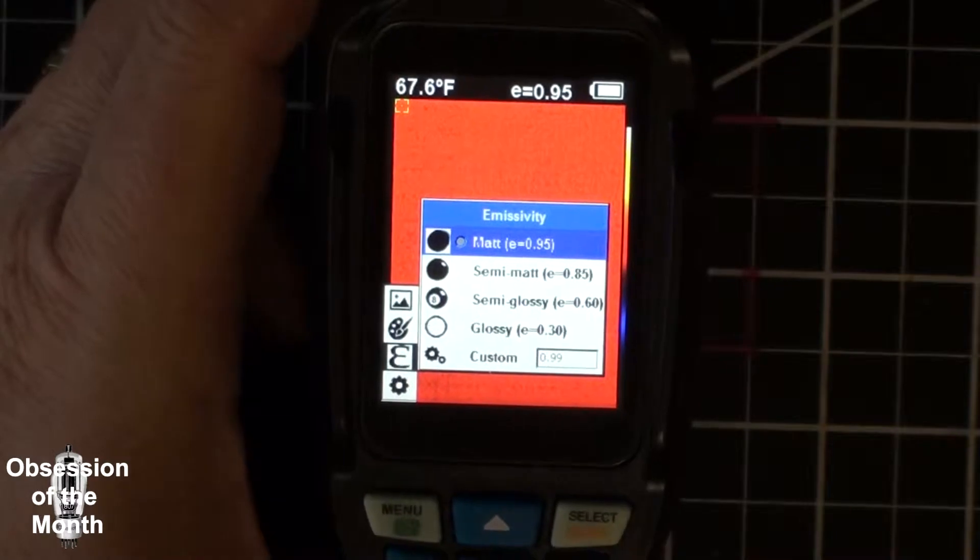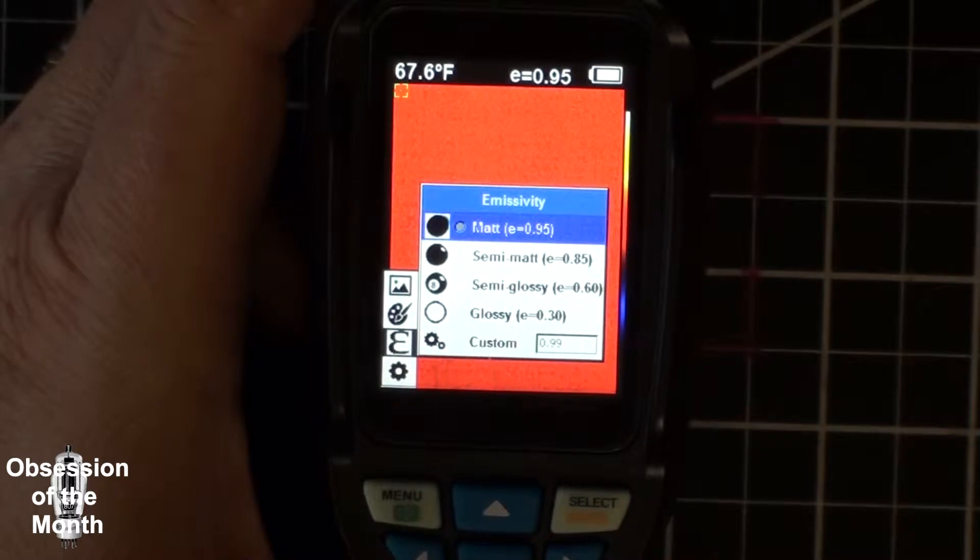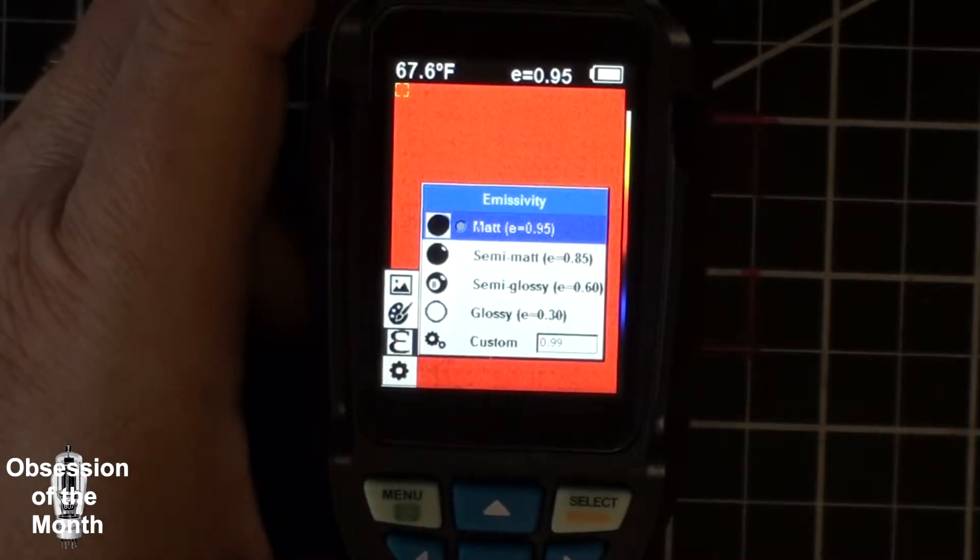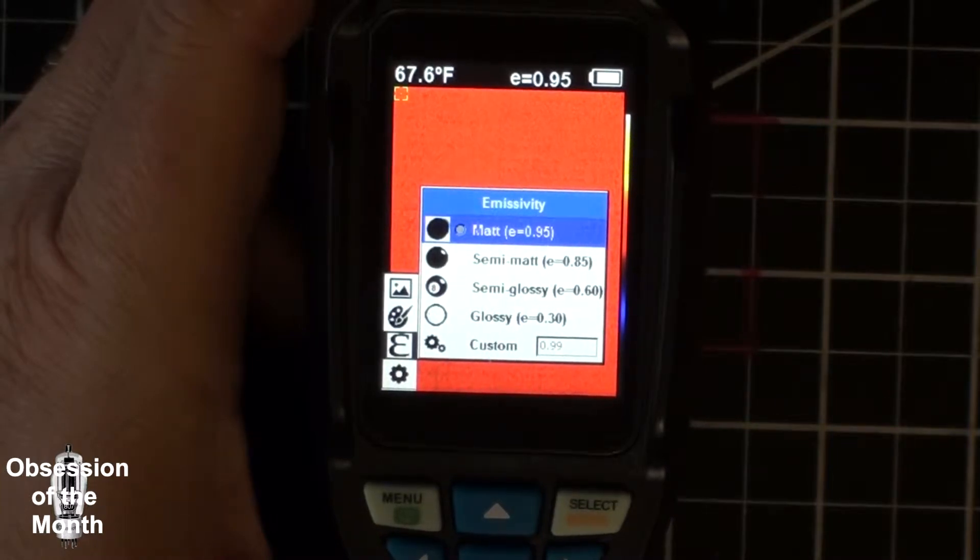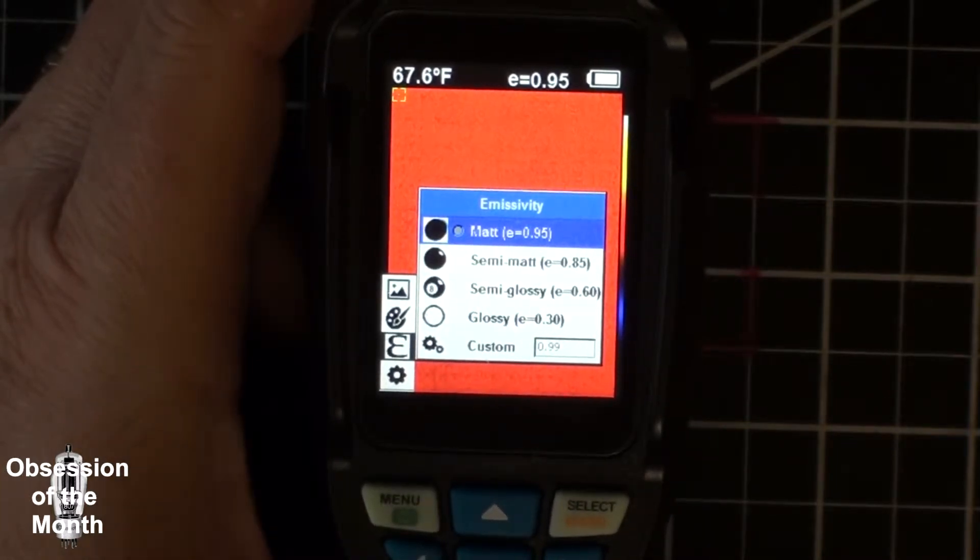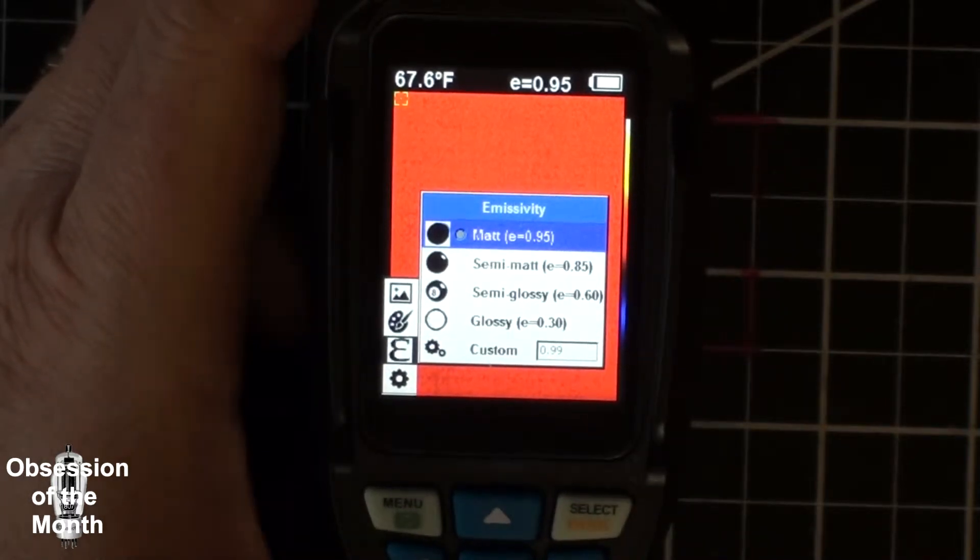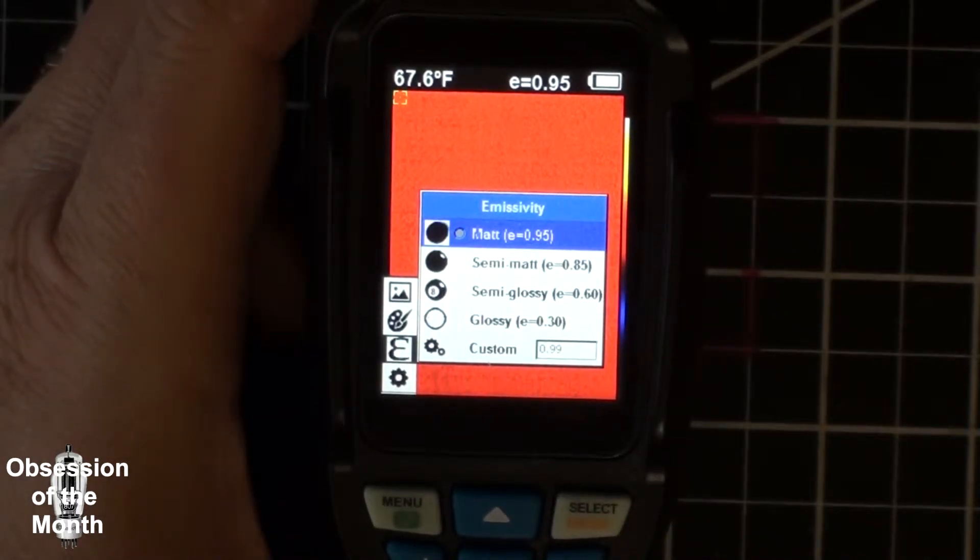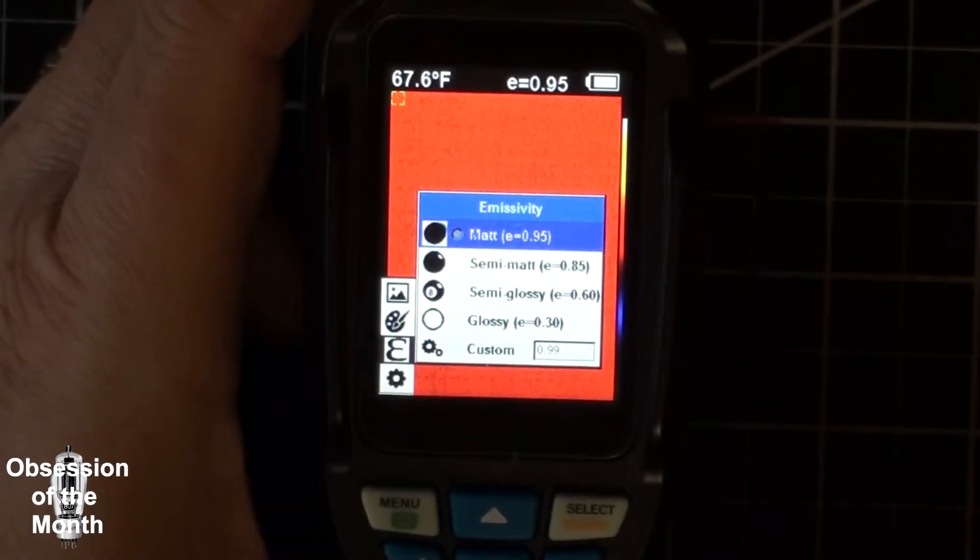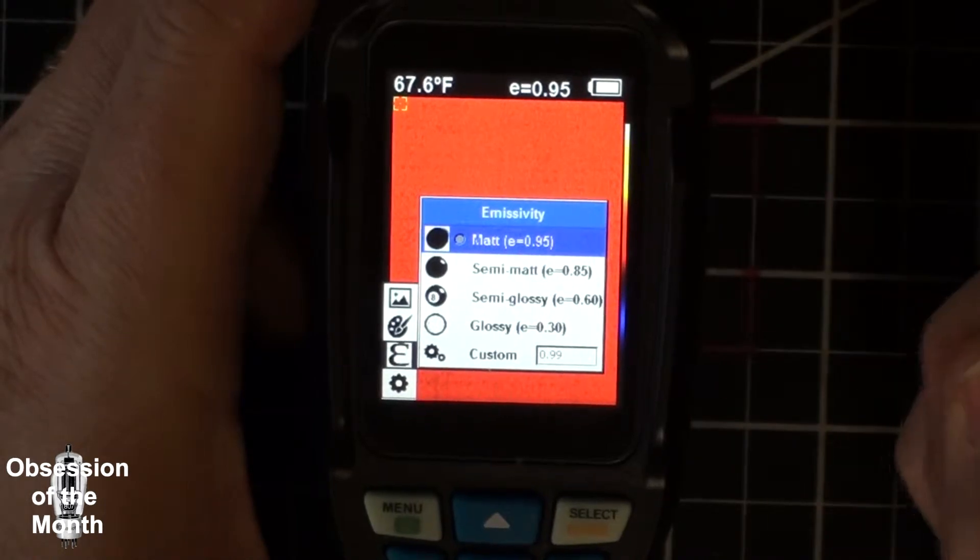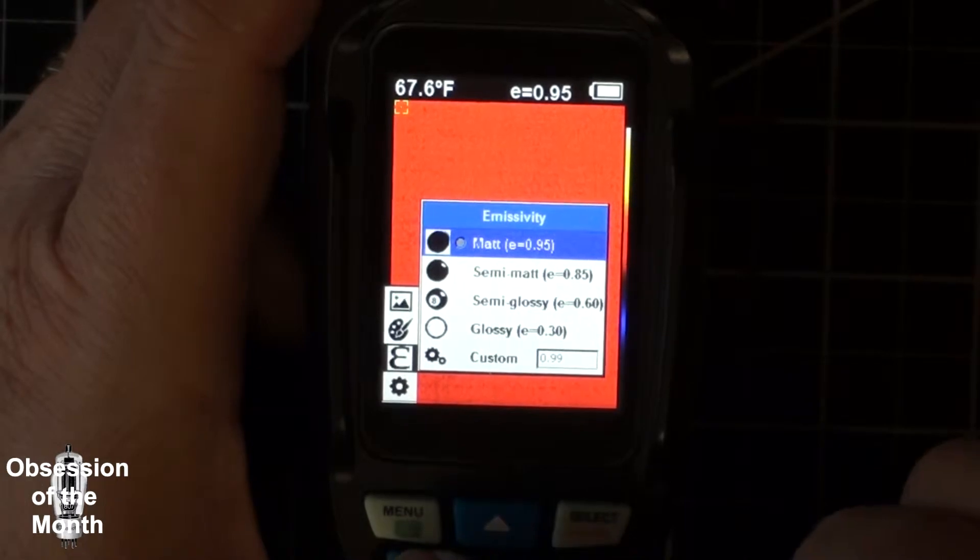Emissivity, this mostly has to do with the type of items you will be trying to image and how well it will be able to tell you the temperature based on its readings. For most applications matte. I've messed around with this and I really couldn't get it to read too much differently.